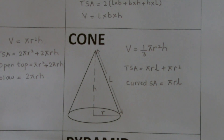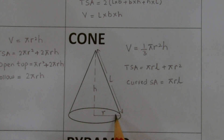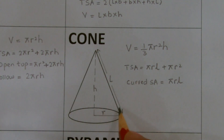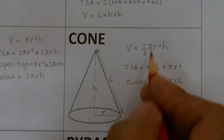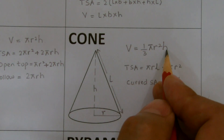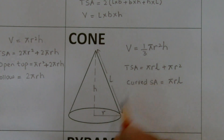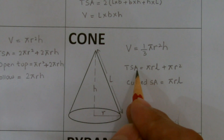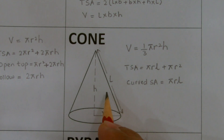For a cone, R is the radius at the base, H is the vertical height, and L is the slant height. To find the volume, the formula is (1/3)πr²H. For the total surface area of a closed cone, we add the curved surface area (πrL) and the base circle (πr²), giving πrL + πr². The curved surface area alone is simply πrL.